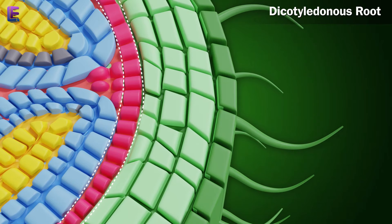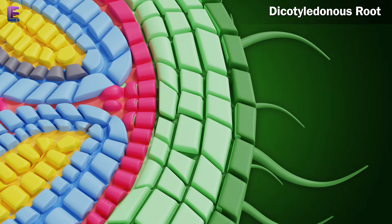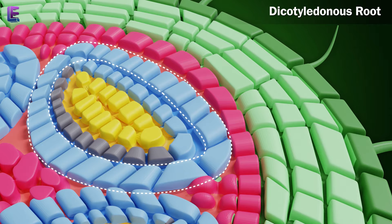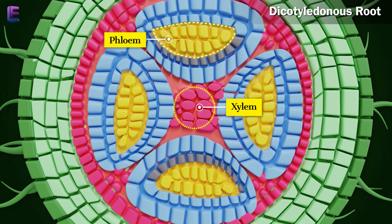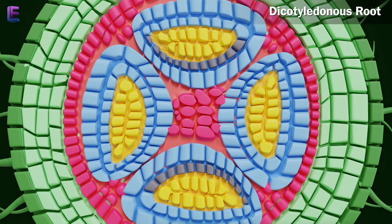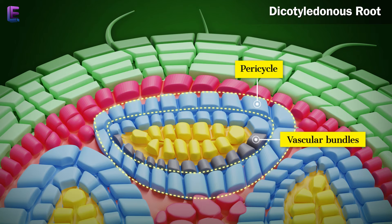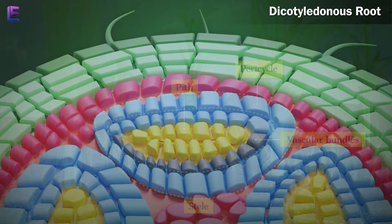The innermost layer of the cortex is called endodermis. Next to endodermis lies a few layers of thick-walled parenchymatous cells referred to as pericycle. The parenchymatous cells which lie between the xylem and the phloem are called conjunctive tissue. All tissues on the inner side of the endodermis, such as pericycle, vascular bundles, and pith, constitute the stele.